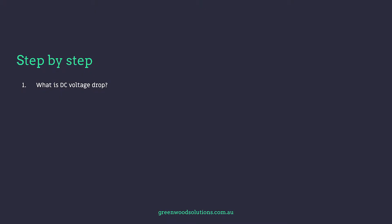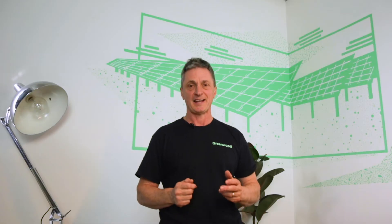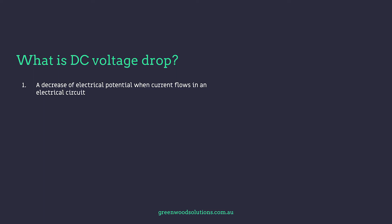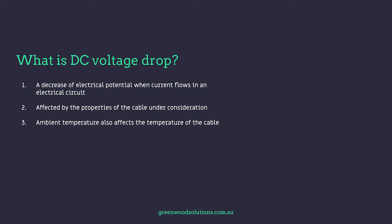So what exactly is DC Volt Drop and why is it important? Is there a significant standard we can reference for DC Volt Drop? The standards are extremely important. DC Volt Drop is a decrease in electrical potential when current flows in a circuit, and it's affected by the properties of the cable under consideration.